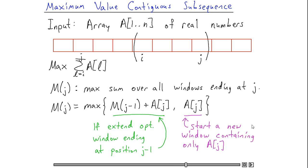These are the only two alternatives I need to consider, because when computing the optimal way to make a window ending at position j, I either extend a previous window or I don't. And if I extend a previous window, then obviously the best window to extend is the optimal window ending at position j minus 1.